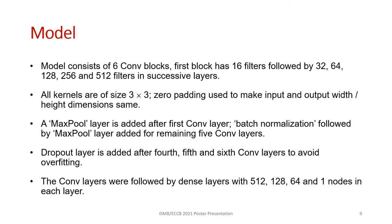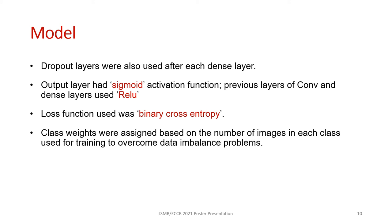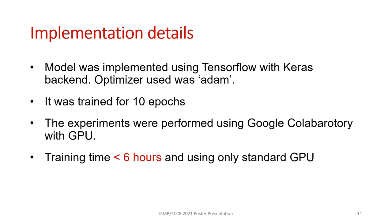Dropout layers were also added after the dense layers. The activation functions used were ReLU and sigmoid, and the loss function was binary cross-entropy. To handle the data imbalance problem, class weights were assigned. The model was implemented using TensorFlow with the Keras package, and the best performance was achieved by training the model for 10 epochs, which took less than six hours in Google Colaboratory with GPU.